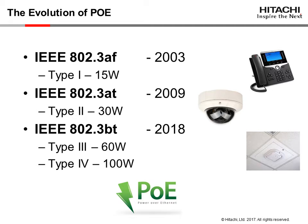Power over Ethernet was introduced in 2003, primarily to support Voice over IP phones. The standard, IEEE 802.3AF, defined the supply of 15 watts of power to the device. Six years later, in 2009, 802.3AT doubled that supply.